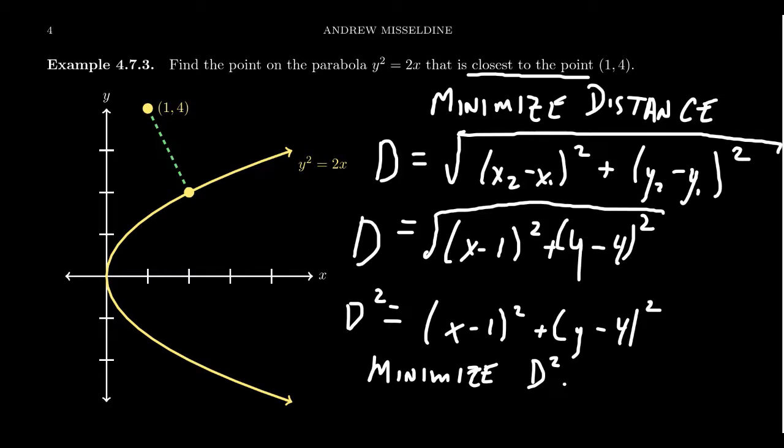All right, but we're still stuck with the situation that we have two variables, x and y. How do we get rid of them? Well, we need a constraint. What is the constraint in this situation? It's the parabola itself, y equals x squared. Because after all, the point has to be a point on the parabola. And so we use the parabola as the constraint.